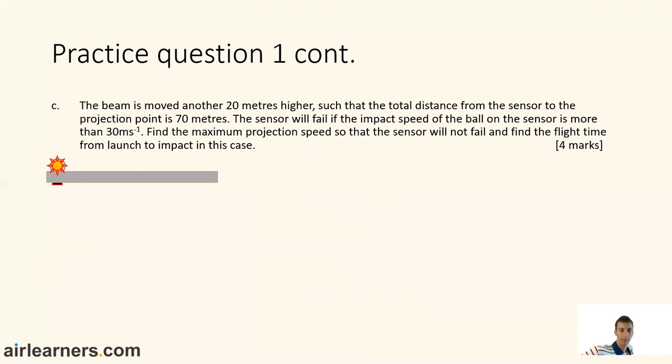Okay. The beam is moved another 20 metres higher such that the total distance from the sensor to the projection point is 70 metres. The sensor will fail if the impact speed of the ball on the sensor is more than 30 metres per second. Find the maximum projection speed so that the sensor will not fail and find the flight time from launch to impact in this case. Four marks, so it's got a couple of parts to it. So you've got four minutes. Good luck, get back to it when you finish the question.